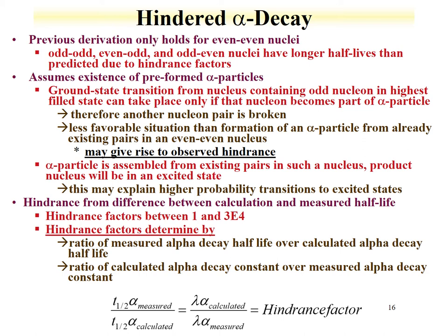Everything we discussed related to the model really holds for even-even nuclei. If we have odd-odd, even-odd, or odd-even nuclei, the half-lives are even longer than predicted due to something called hindrance factors. The model assumes pre-formed alpha particles in the nucleus. Ground state transitions from nuclei containing an odd nucleon can only take part if that odd nucleon becomes part of the emitted alpha particle. This is unfavorable because alpha particles can already be formed from existing even-even pairs; a nucleon pair would have to be broken.